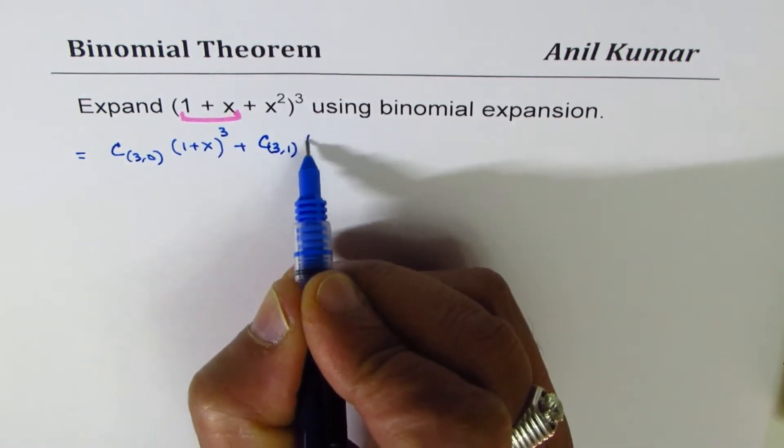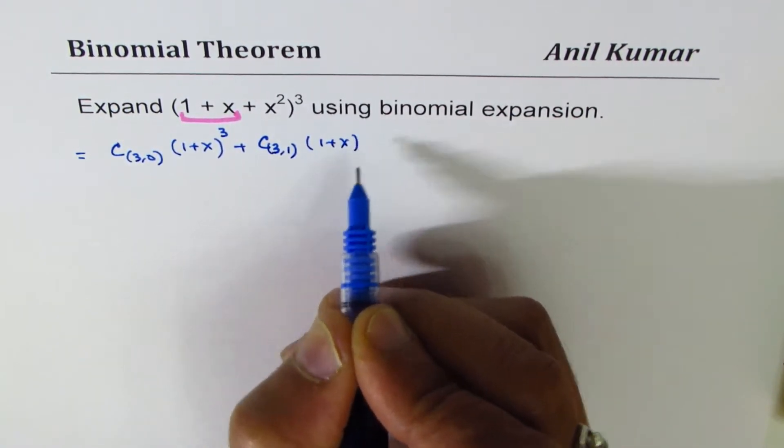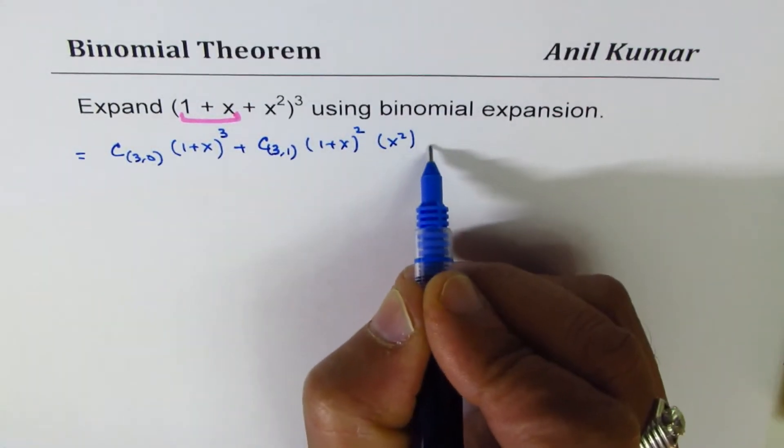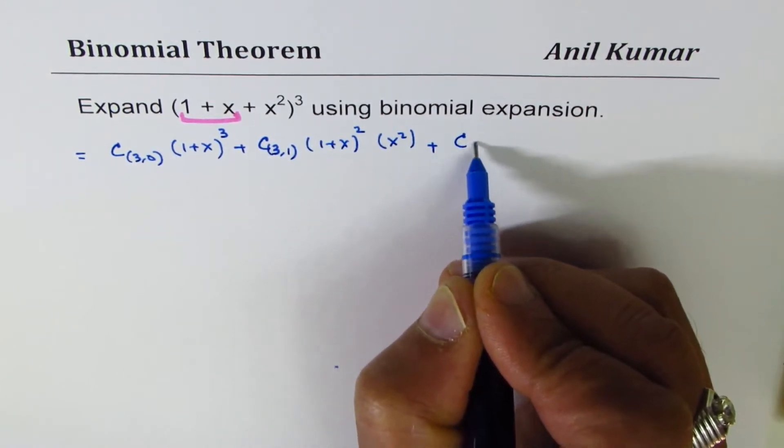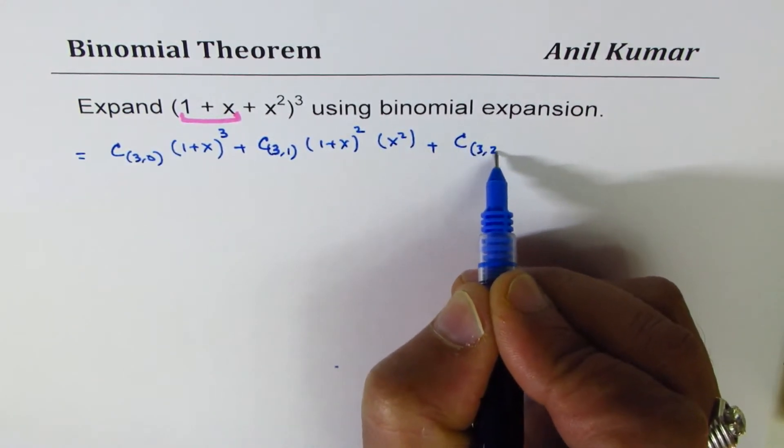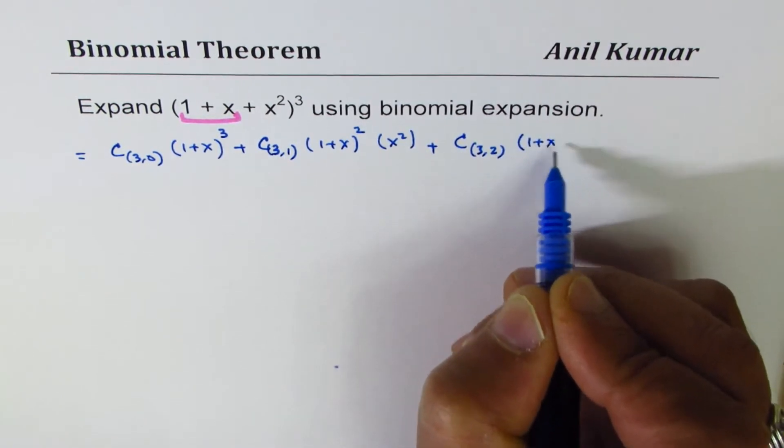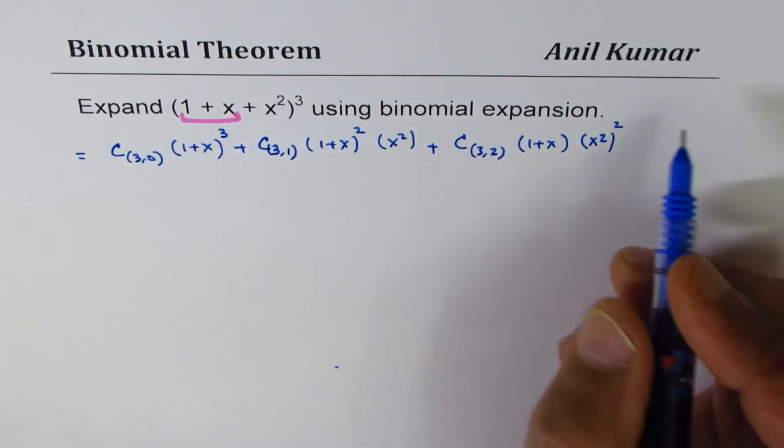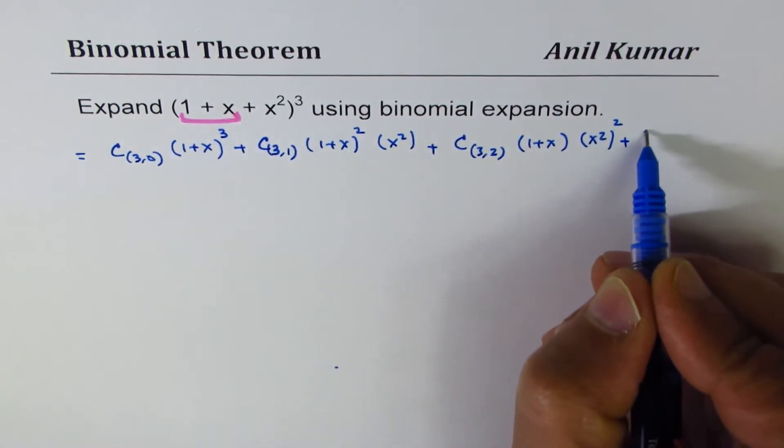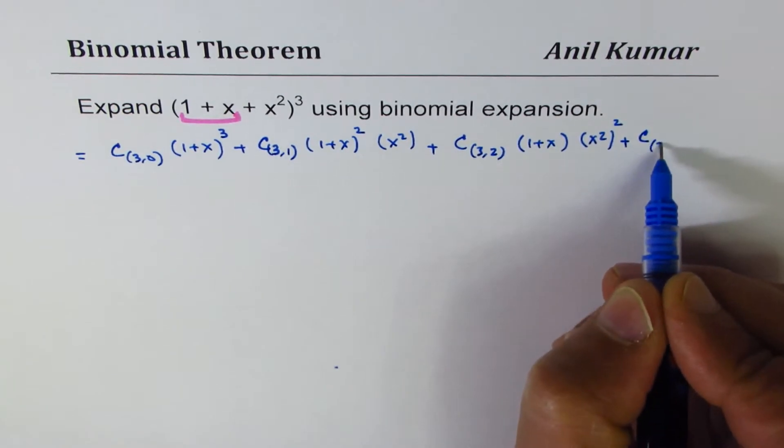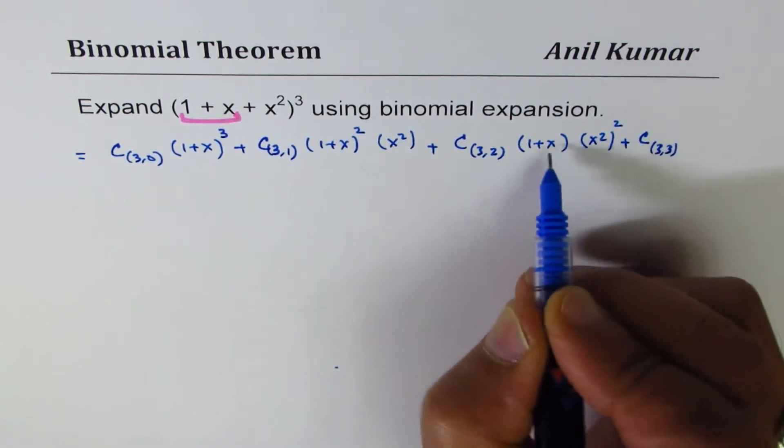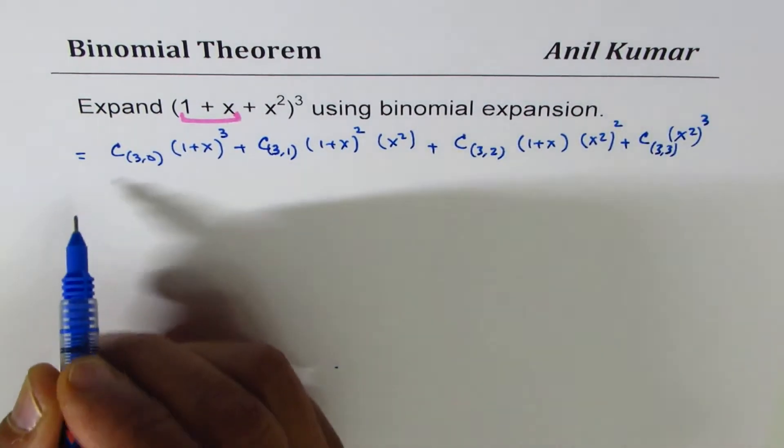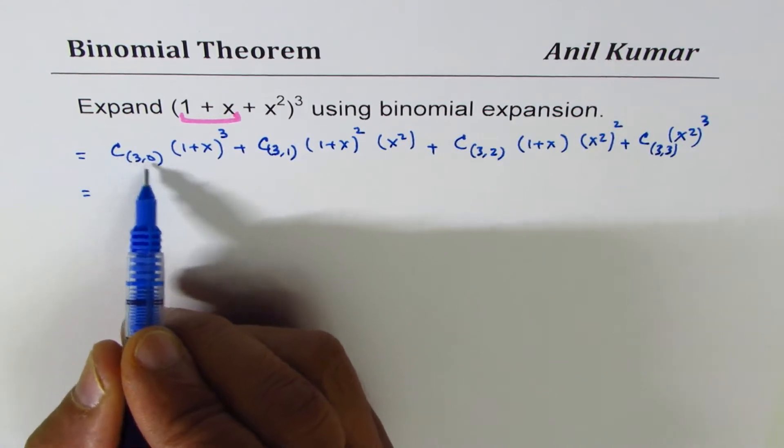plus C(3,2)(1 + x)(x²)² plus C(3,3)(x²)³, right?